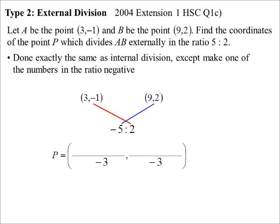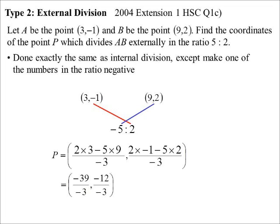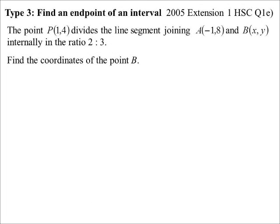So, add them together. Negative five and two gives me negative three on the bottom of the fraction. To get the x value, multiply along. Two times three. Negative five times nine. To get the y value. Two times negative one. Negative five times two. And, yes, that will tidy up. I get my point 13, four. So, basically, exactly the same way of doing it. Just when it's an external, make one of the numbers in the ratio negative.